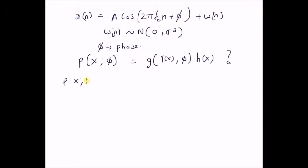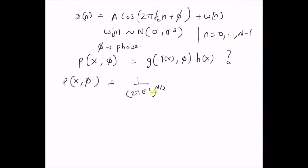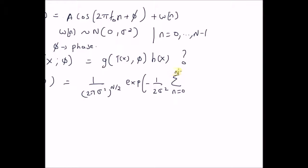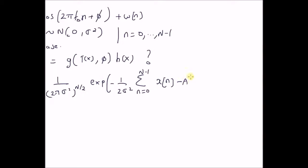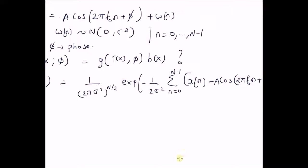For these observations x — that is, x is basically a vector of observations x(n) — the probability distribution is given by (1/(2π·σ²))^(N/2). Note that there are N observations, n equal to 0 to N minus 1, that is why the normalizing constant is (1/(2π·σ²))^(N/2), multiplied by exponential of minus 1/(2σ²) times the summation from n=0 to N−1 of (x(n) minus A·cos(2π·f₀·n + φ)) squared. This is the probability distribution of the observation vector x.